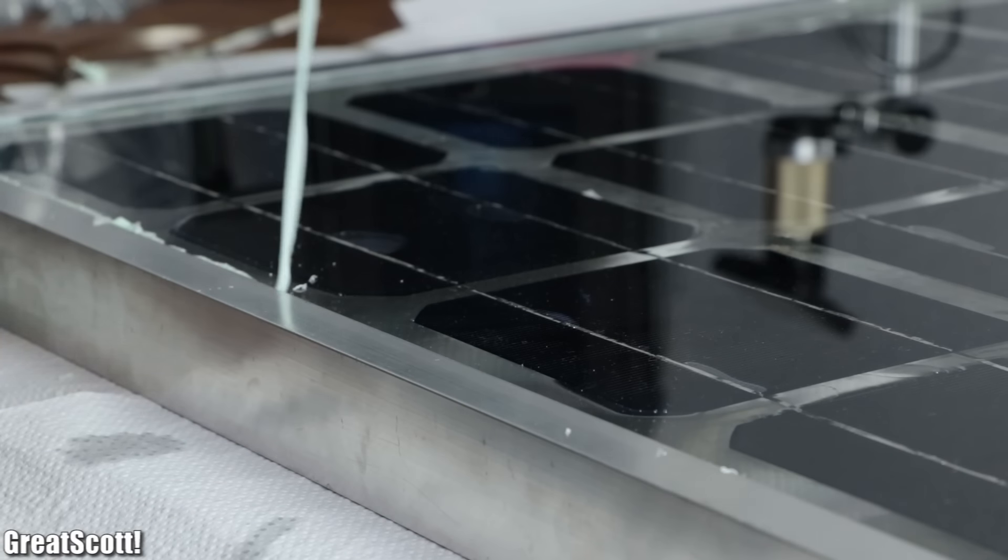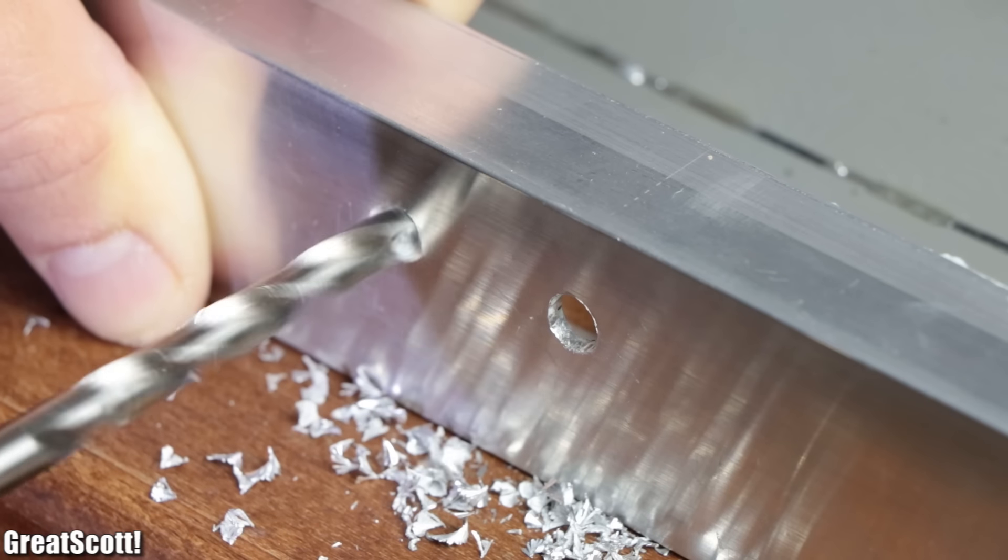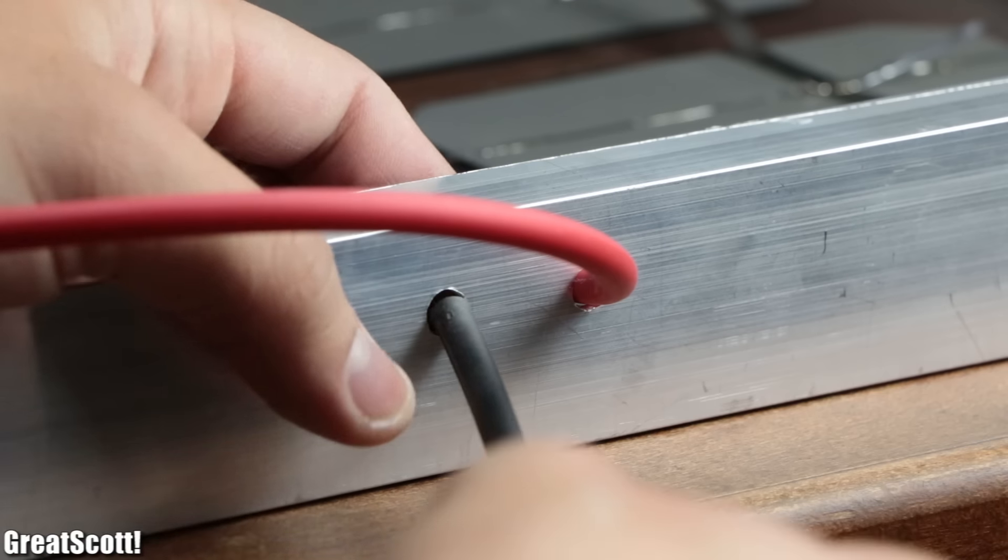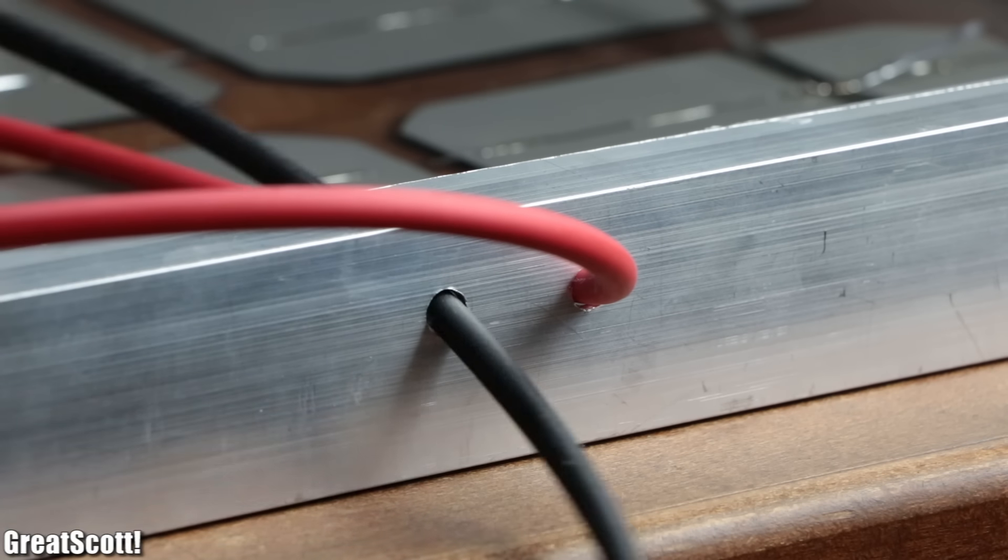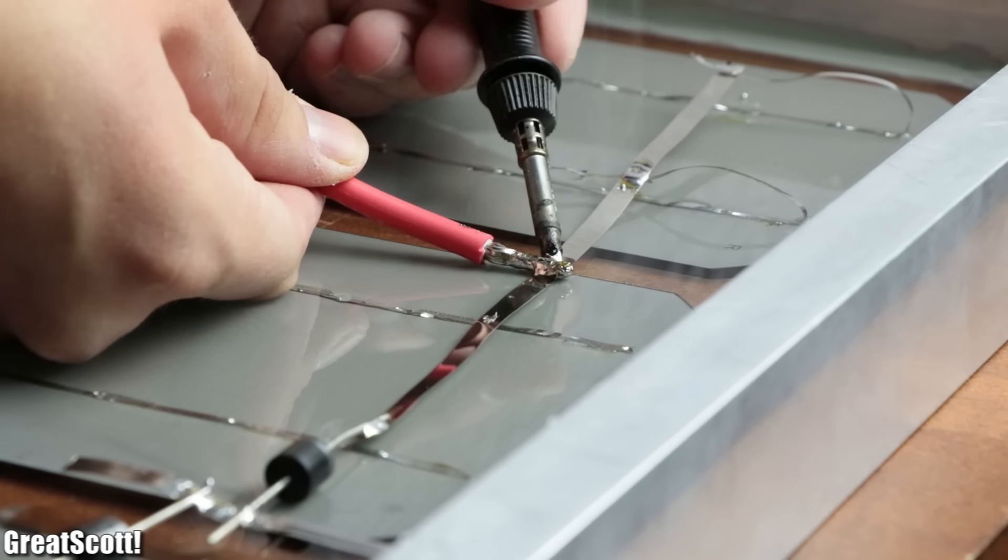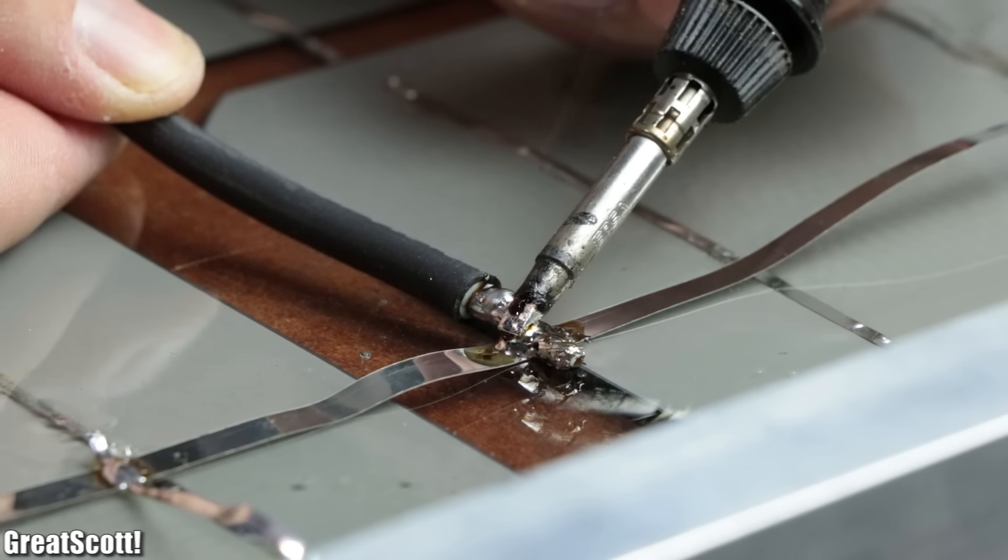Anyway, after I cleaned up the panel I drilled two holes in the side of it, pushed two six square millimeter wires through it and soldered those to the positive and negative terminal of the DIY panel.